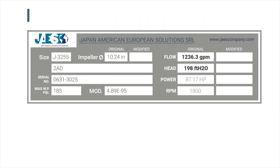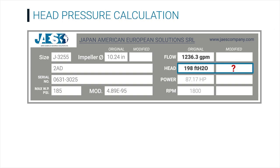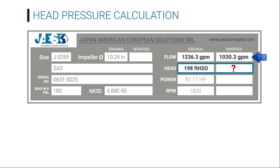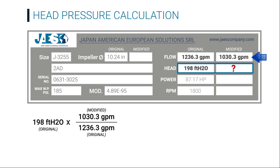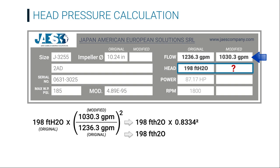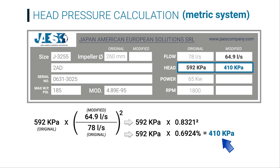Now we are going to find out the value of the new head pressure if we change the flow rate from 1236.3 gallons per minute to 1030.3 gallons per minute. To do that, we multiply the original head pressure by the division of the modified flow rate and the original flow rate, making sure to square the number we get from this division. Squaring the result of this division and multiplying by the original head pressure value allows us to get 138 feet of water, or 410 kPa.